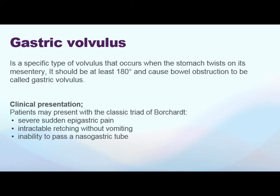Gastric volvulus occurs when the stomach twists around itself and its mesentery, and it should be at least 180 degrees or more — if less, it is not volvulus. The classical clinical presentation is the Borchardt triad: severe sudden epigastric pain, intractable retching without vomiting — the patient has nausea but cannot vomit — and inability to pass a nasogastric tube because it is obstructed.